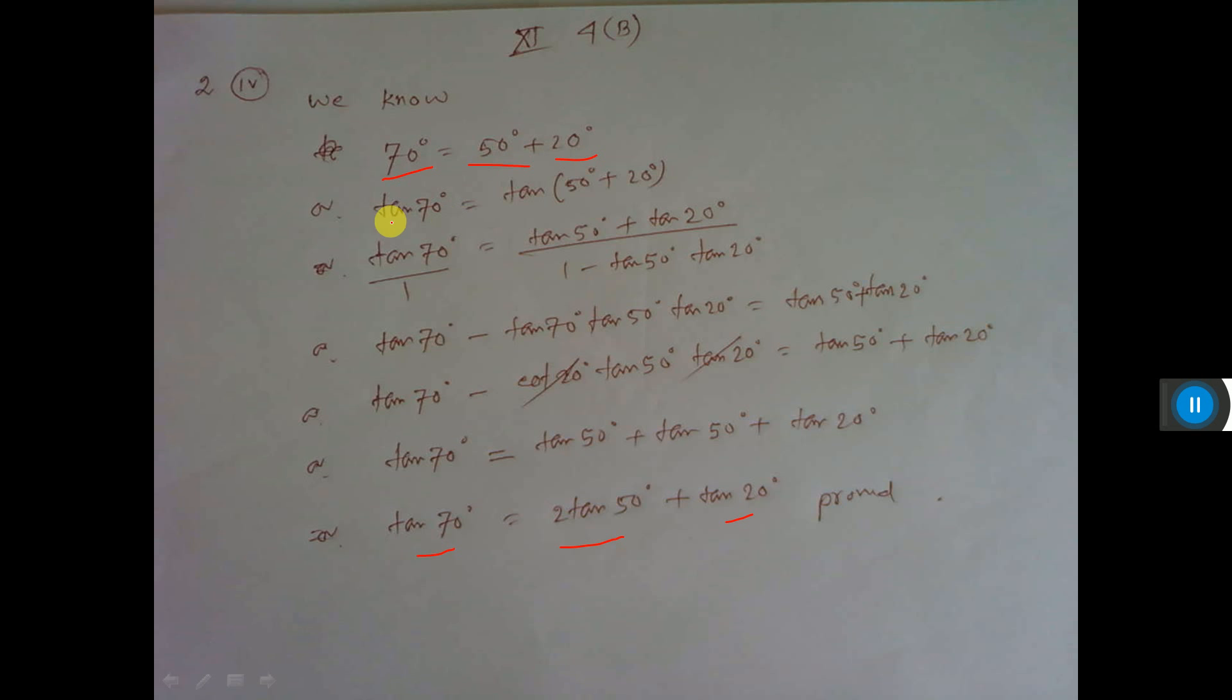If you consider 70 equals 50 plus 20, you see 50 plus 20 equals 70 only. Now both sides you take tan. So tan 70 equals tan(50 + 20), means tan(a + b) formula you apply: tan a plus tan b by 1 minus tan a into tan b. Then cross multiplication.